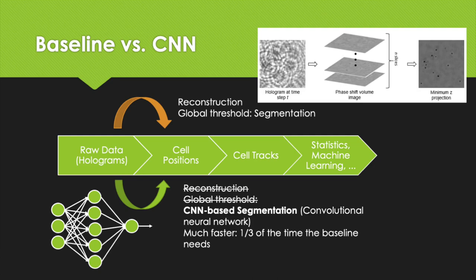We aim to replace the baseline segmentation algorithm. The costly image reconstruction, an example is given on the right, and subsequent segmentation is substituted by a convolutional neural network that learns to mimic the segmentation of the baseline algorithm. The first advantage we observed right away is an increase in speed. Only one third of the time is needed to process incoming data.